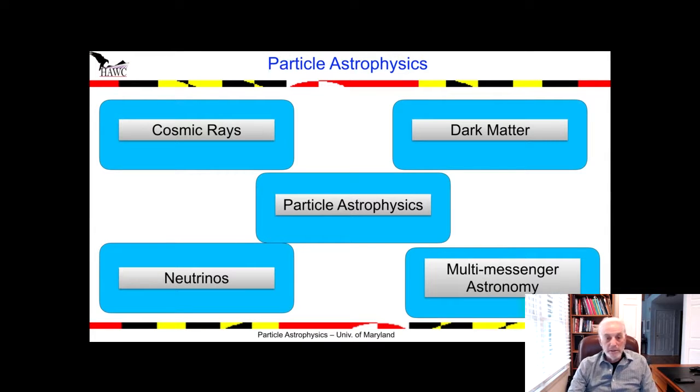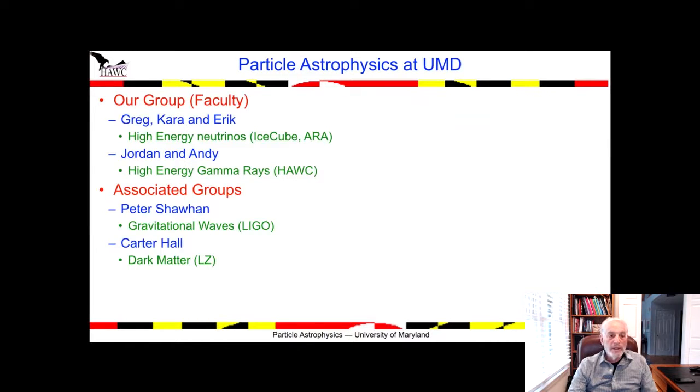At the University of Maryland, one of the things that positions us so well is we have really strong groups working on, for example, IceCube and the radio extension with Greg Sullivan, Kara Hoffman, and Eric Blaufus. Andy Smith and I work on the high energy gamma ray experiment HAWC, and we have associated groups with Peter Schaun working on gravitational waves and Carter Hall working on dark matter.